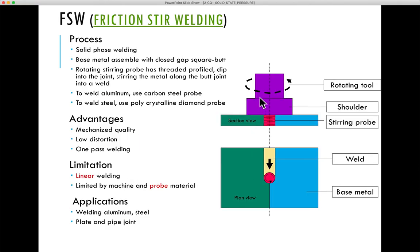Two dissimilar materials can be joined by this process. Applications of this process are growing — a famous application is the welded seam of the aluminum alloy main fuel tank for space shuttles. This process is used in space shuttle applications because it does not produce a lot of heat, does not require filler material, and does not produce defects such as pores or cracks. Space applications require very reliable joints, and friction stir welding produces a very good, reliable joint for dissimilar materials as well.